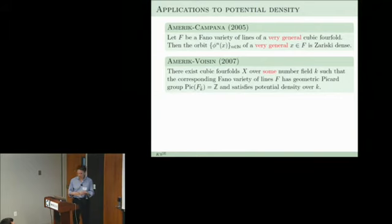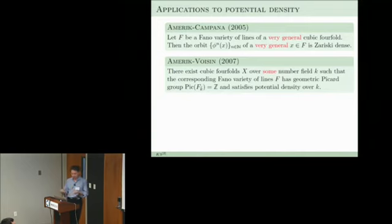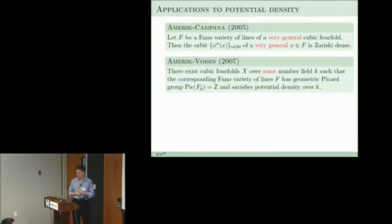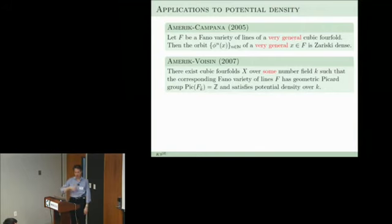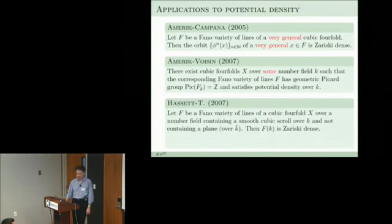This is interesting because for K3 surfaces we don't know that if you have Picard rank 1, rational points will be dense after some finite extension of the ground field — we just don't have enough geometry to play with. But here, even though you have Picard rank 1, there is some geometry in the background that allows you to move around the rational points. The variety that Brendan and I looked at doesn't have Picard rank 1 — we insisted on having a particular scroll in our cubic fourfold, so the Picard rank is 2.